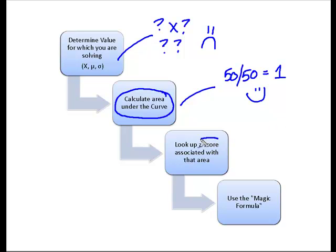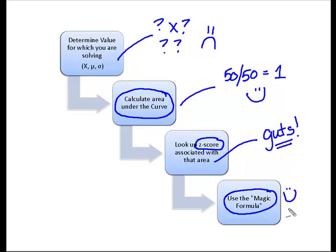Then I'm going to look up a z-score associated with that area, and I'm going to do this using a standard normal distribution table, but I'm going to go inside and look around in what I like to think of as the guts of the table, which is basically the inside of the table, and then I'm going to apply the magic formula to allow me to solve for that unknown value, which gives me another happy face.